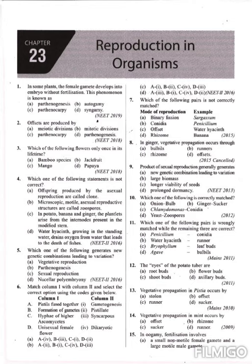The product of sexual reproduction generally generates a new combination leading to variation. Sexual reproduction always generates new genetic combinations that lead to variation. So question number 9, option A is the correct one.